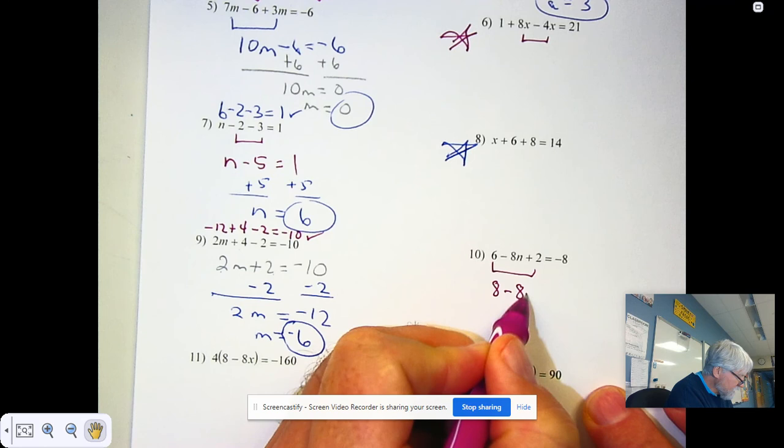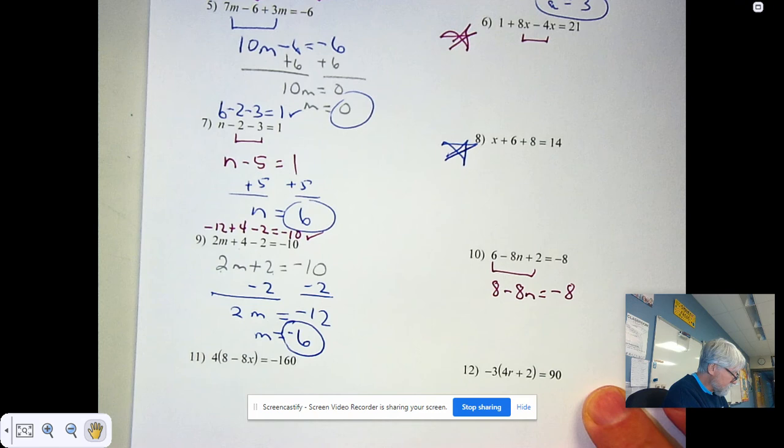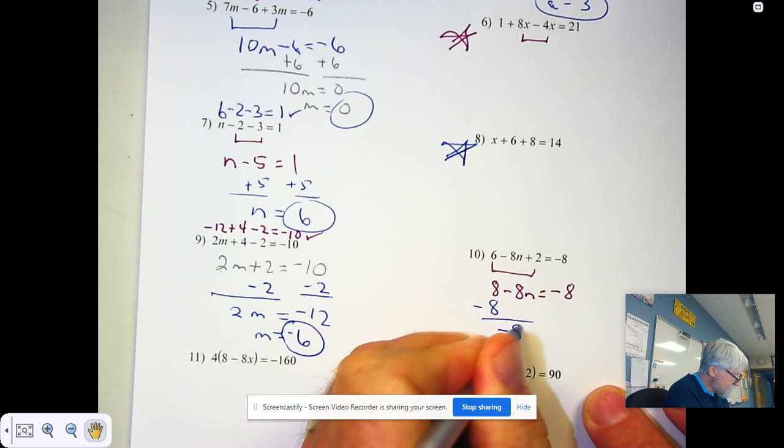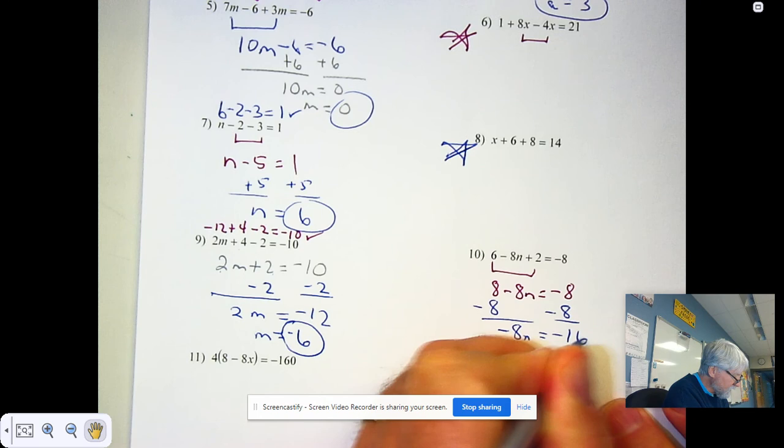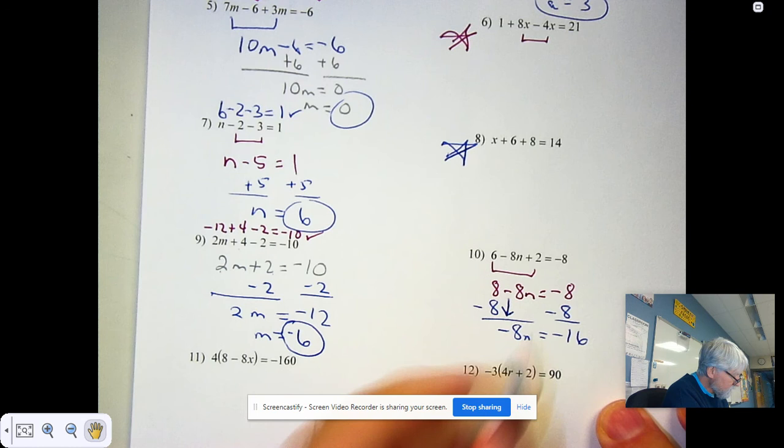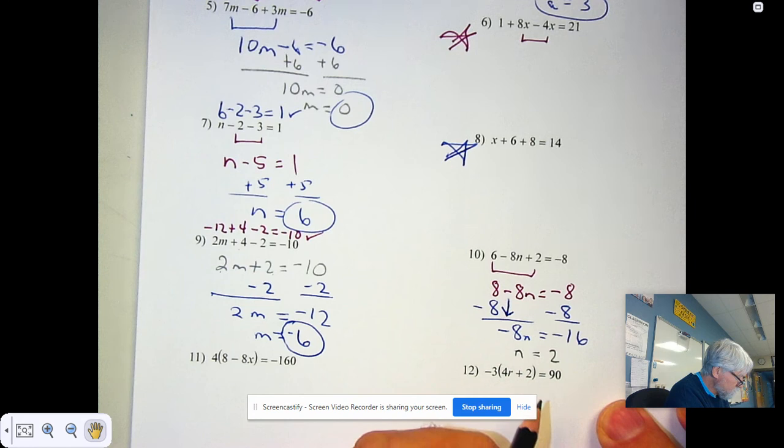Careful. When I go 6n plus 2n and get 8n minus 8 equals minus 8. When I subtract that 8, I will get minus 8n equals minus 16. Careful. Make sure you bring that minus in front of the 8 now. When I solve by dividing, I'll get an